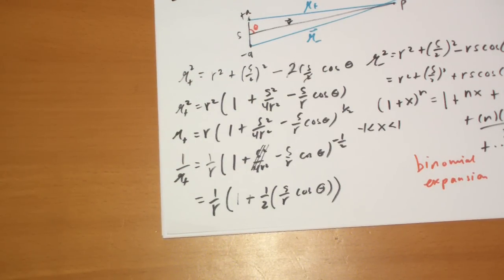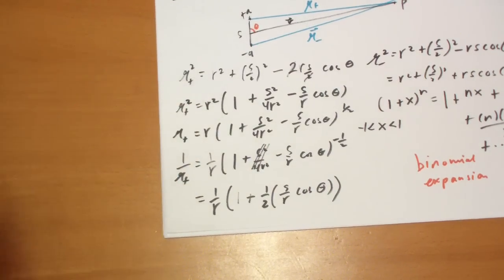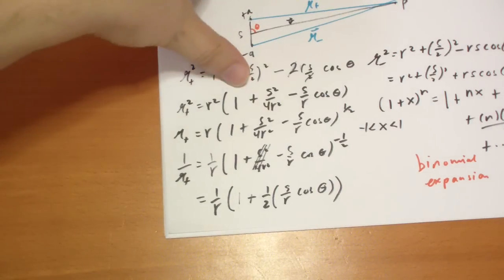The first two terms of the binomial expansion of that. And our mathematics friends are probably going to be saying, you can't just do that. And, well, we're physicists and we get to approximate. So we're going to approximate by dropping that term, and we're going to approximate by ignoring the rest of the terms of the binomial expansion. Don't worry, it's going to make sense.